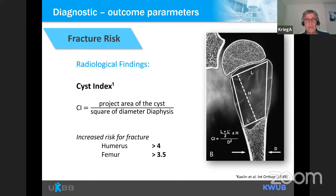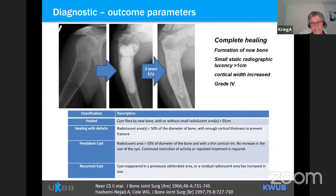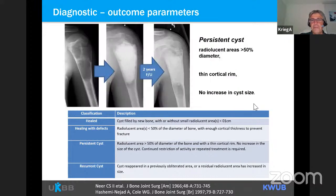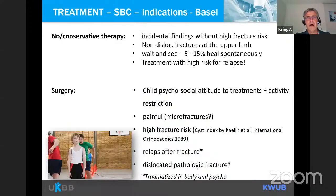For measuring radiological outcome after treatment, the Neer classification or the reverse Neer classification is most commonly used. Outcome parameters include: complete healing (grade 4), partial response with filling of the cyst by new bone and cortical thickness (grade 3), a static radiolucent area under 50% (grade 2), a persistent cyst with radiolucent area over 50% (grade 1), and a recurrent cyst with increased radiolucent area. Our indications in Basel involve conservative therapy when there is an incidental finding without high fracture risk; non-displaced fractures at the upper limb can be treated conservatively with wait-and-see.